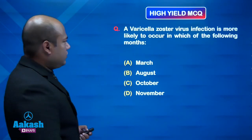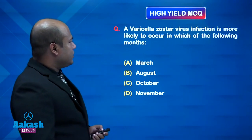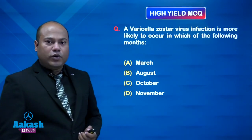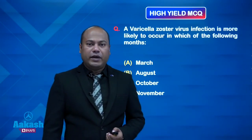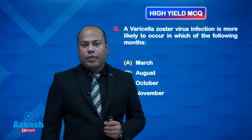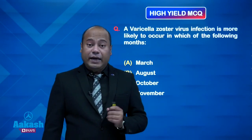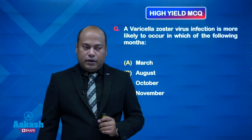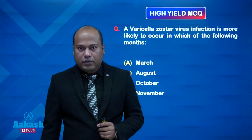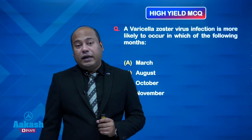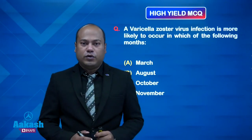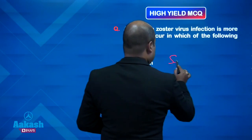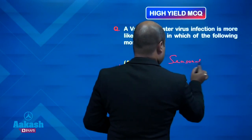MCQ: Varicella zoster virus infection is more likely to occur in which months? Yes, chickenpox has a seasonal distribution. It happens mainly in late winter to early spring — around March, early April, late February. This pattern is called seasonal distribution.